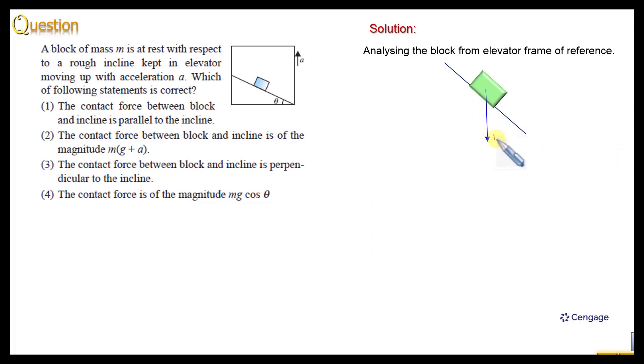This is mass multiplied by acceleration and weight of the object will also act in the downward direction, vertical downward direction. This is mg. We can combine these two forces mg plus a.